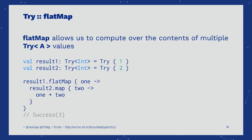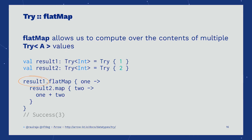FLATMAP allows us to combine and compose multiple TRY operations in a sequential fashion. In this case, the results of RESULT1 and RESULT2 are combined to produce a new TRY in the form of SUCCESS.